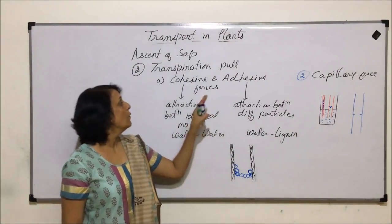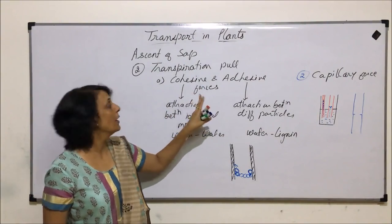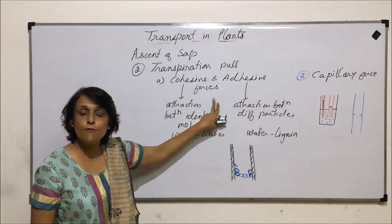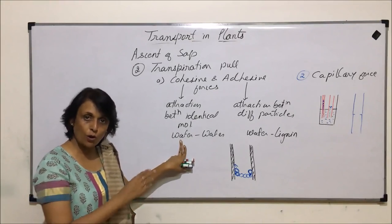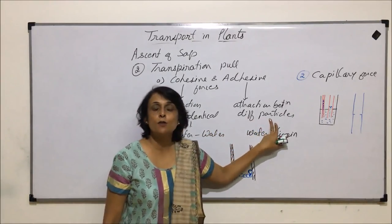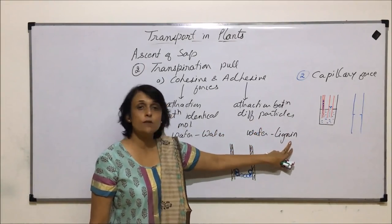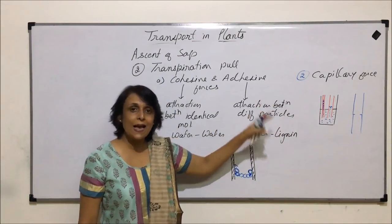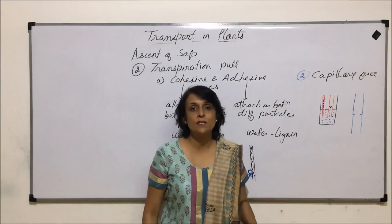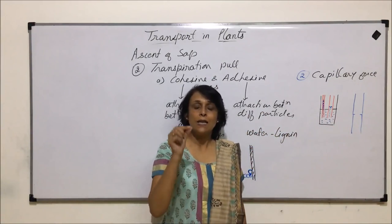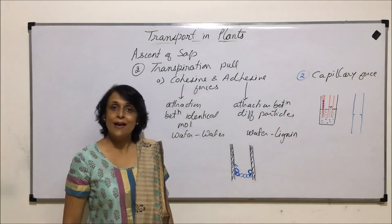So the two forces that help in transpiration pull are: first, cohesive-adhesive force — cohesive is attraction between identical particles, water and water in this case; adhesive is between unlike particles, here water and lignin found in the wall of xylem vessels. Second is capillary force, which basically means that the thinner the tube, the water rises on its own due to the property of capillarity.